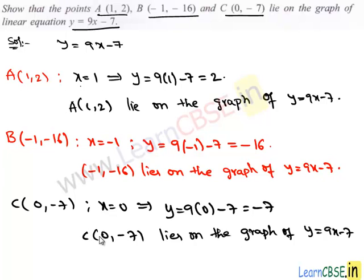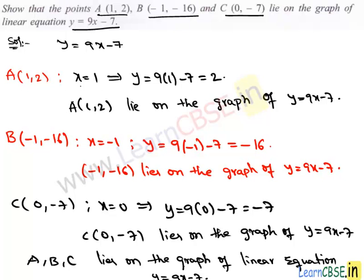From these three statements, we can say that A, B, C are the three points which lie on the graph of the linear equation y = 9x - 7, and this completes our solution.